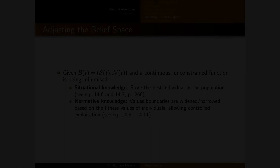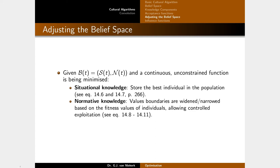The second function is adjusting the belief space. Once you've accepted a set of individuals, you actually update the belief space. In this example, the belief space contains only situational and normative knowledge for a multi-dimensional minimization function. Situational knowledge is as simple as storing the best individual in the population. Normative knowledge stores value boundaries that are widened and narrowed based on the fitness values of the accepted individuals, allowing for controlled exploitation.